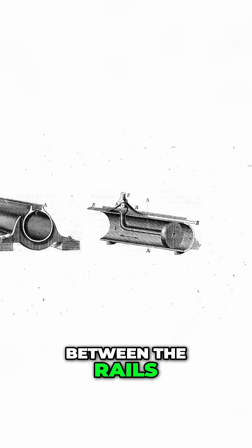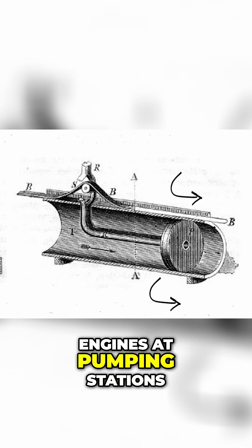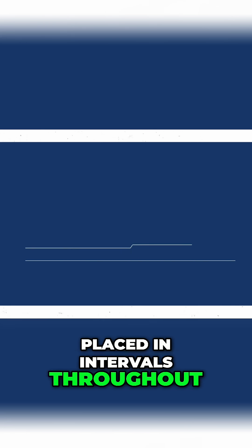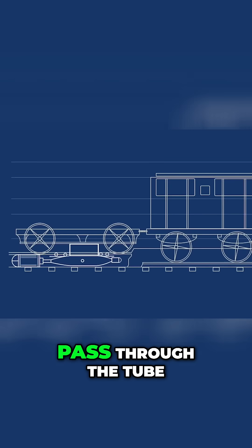With a piston running through a pipe located between the rails, air is sucked out of the tube by engines at pumping stations placed in intervals throughout the track. The fast-moving pressure causes the piston to pass through the tube.